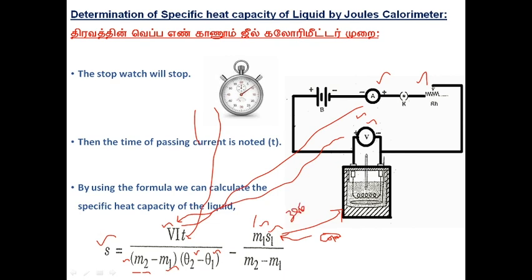We have to put 385 in S1. We know M2 and M1. After that, we have to find the specific heat capacity of the water.